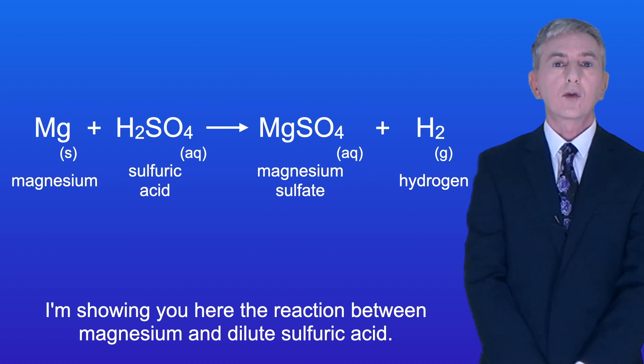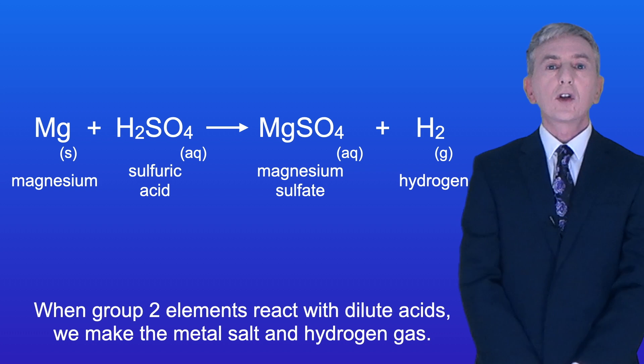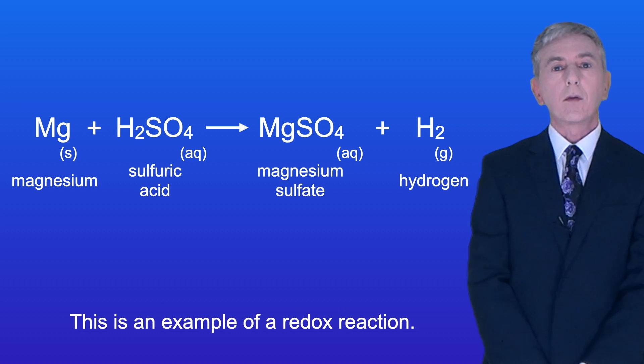I'm showing you here the reaction between magnesium and dilute sulfuric acid. When group 2 elements react with dilute acids we make the metal salt and hydrogen gas and this is an example of a redox reaction.